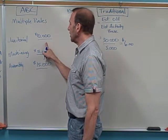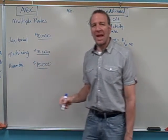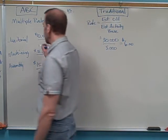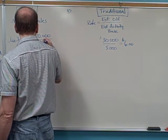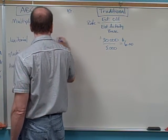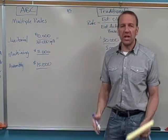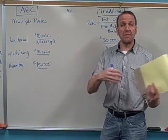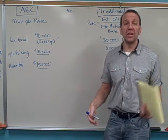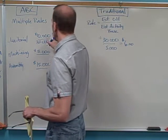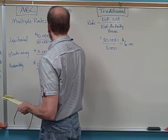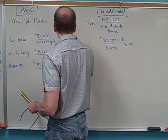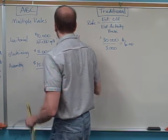Now janitorial, let's say that the best way to allocate janitorial services is based off of square footage. And let's say that there's 20,000 square feet in this plant. So each area then gets allocated overhead for janitorial services based off of how many square feet they're using in the plant. So $10,000 divided by 20,000 square feet gets us a rate of 50 cents per square foot.